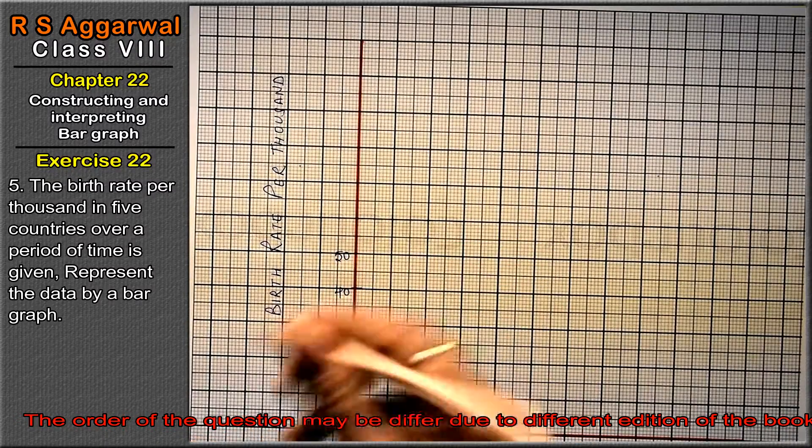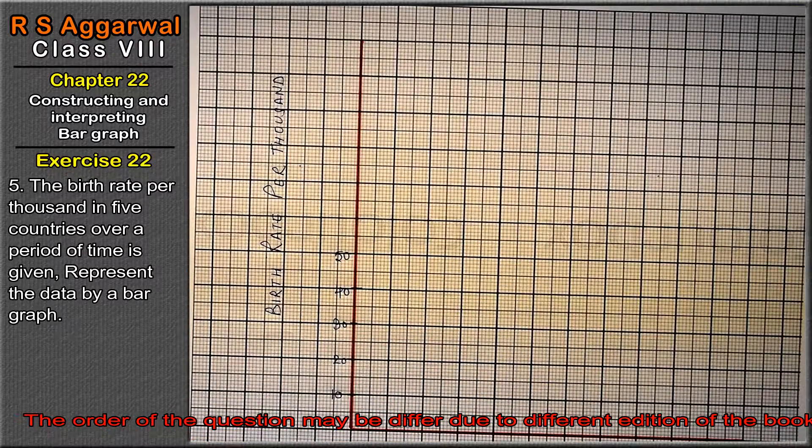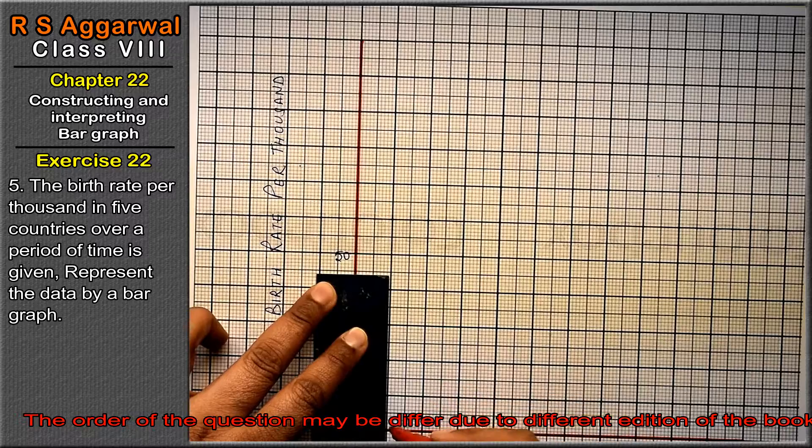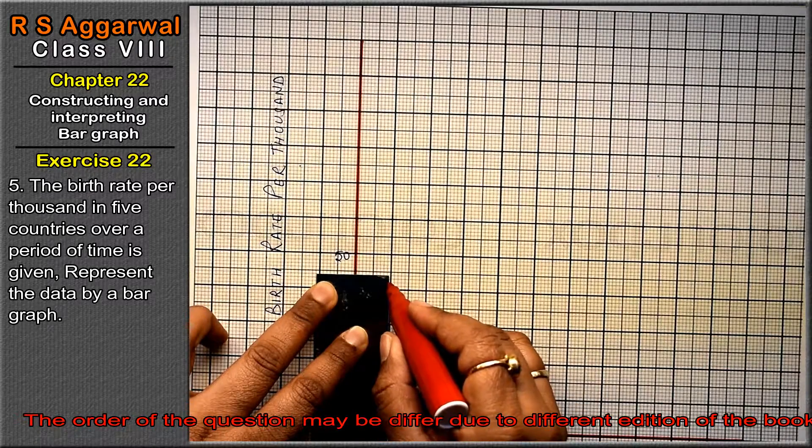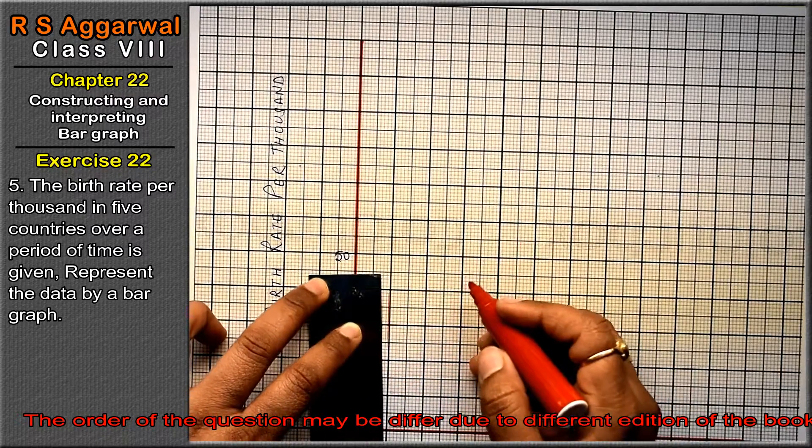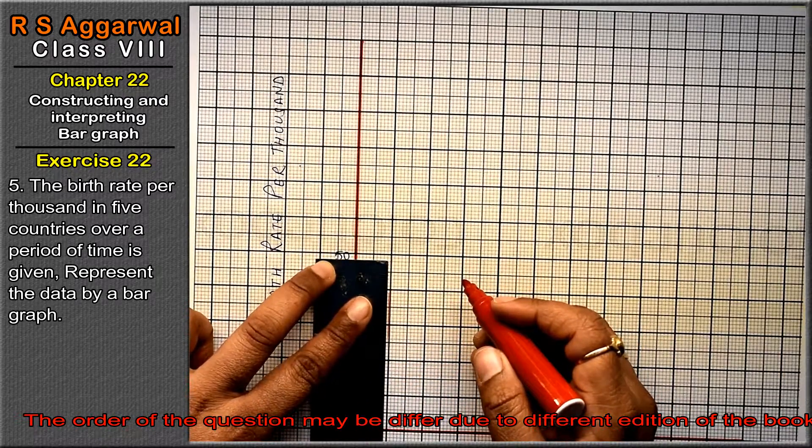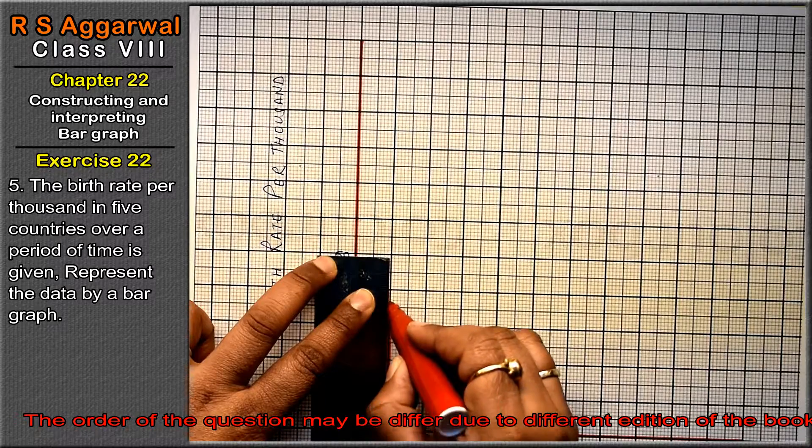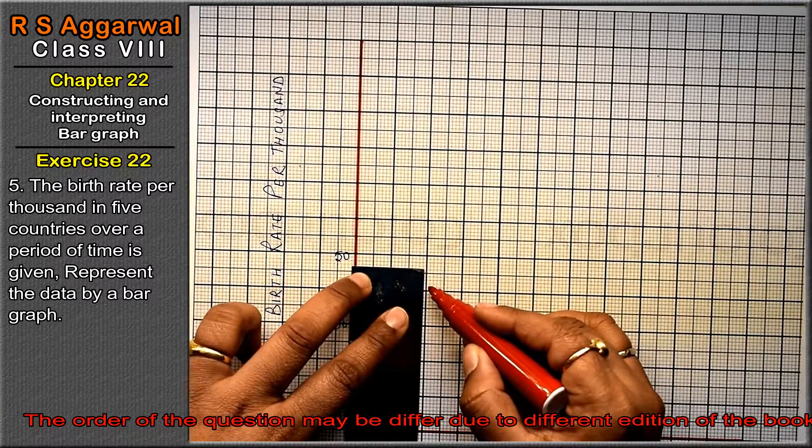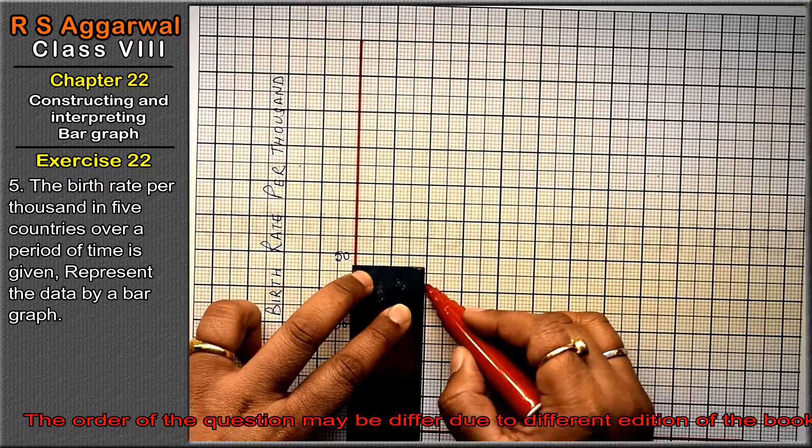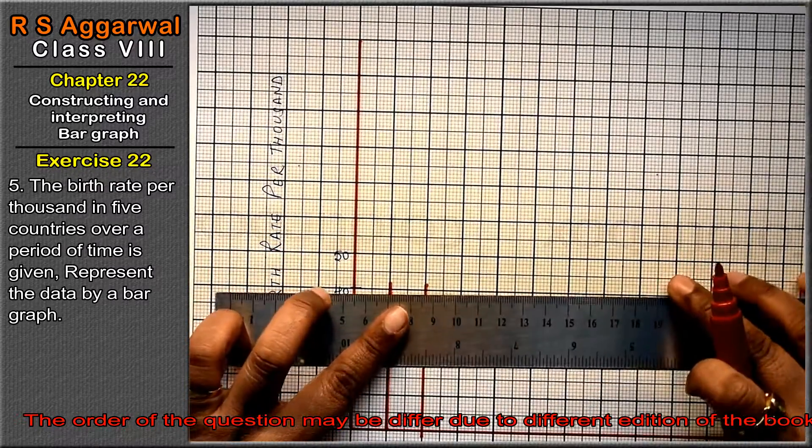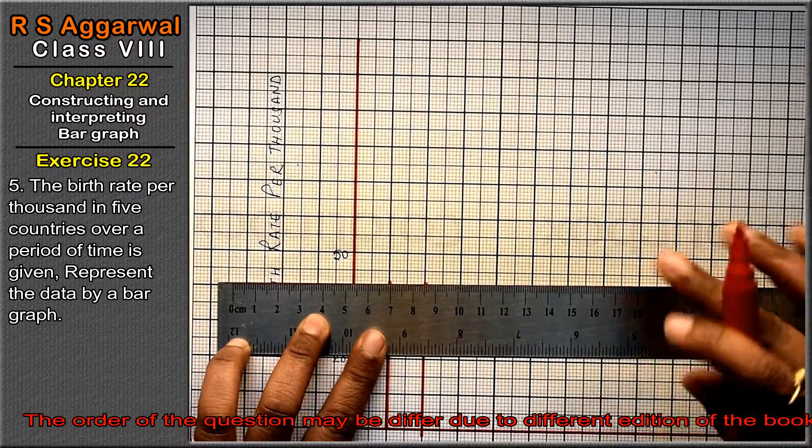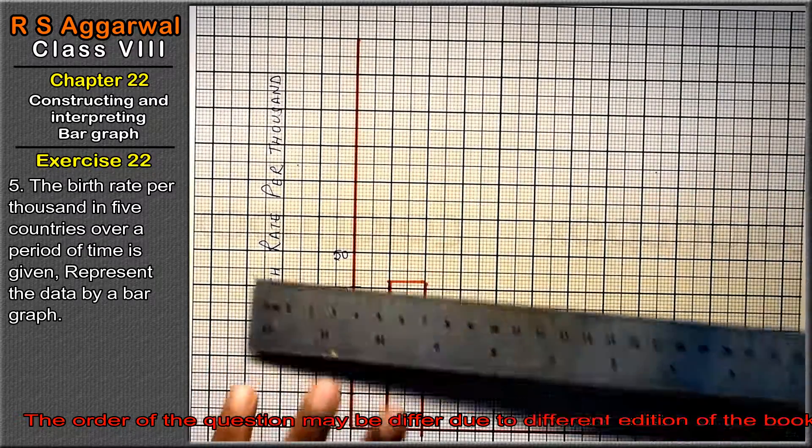Now let's see, first we will make 42. So how will it be? 40 and 2 points: 1, 2, 3, 4 and 2 more. Similarly over here. So this is our China.